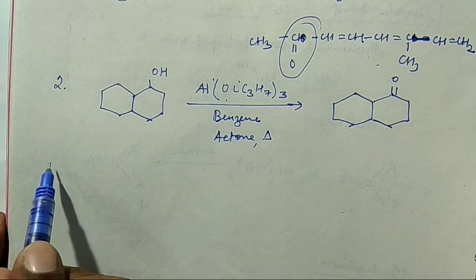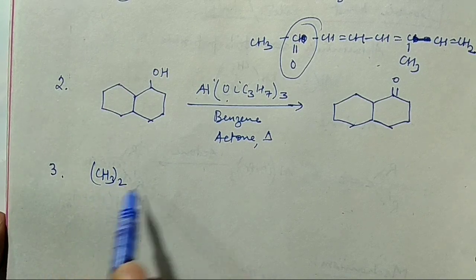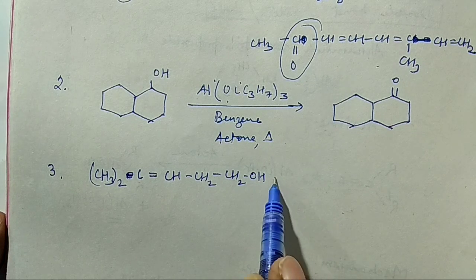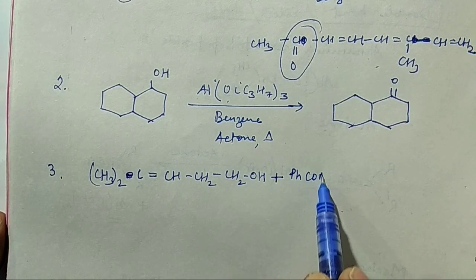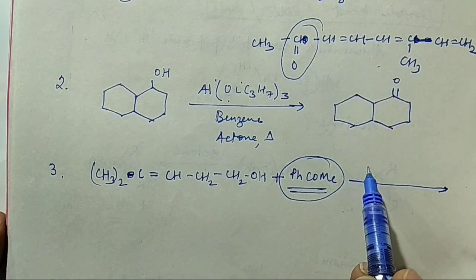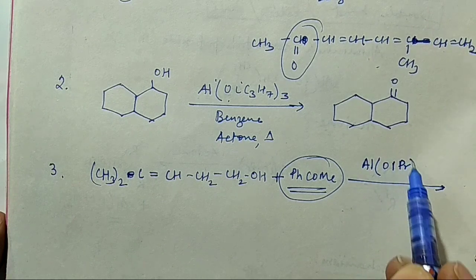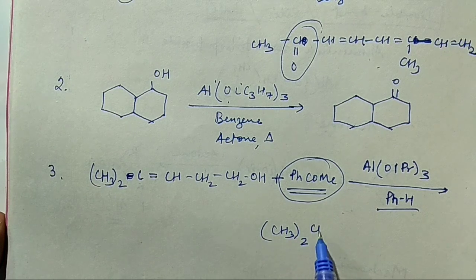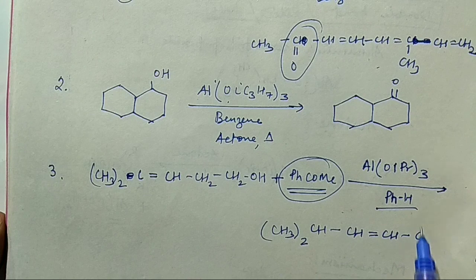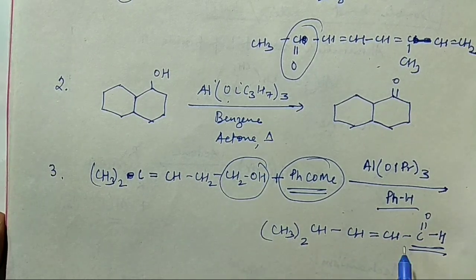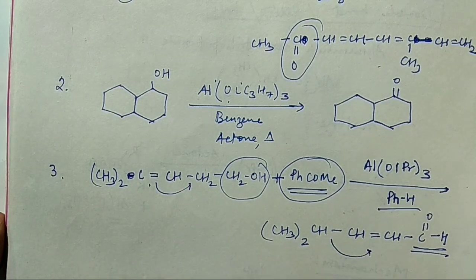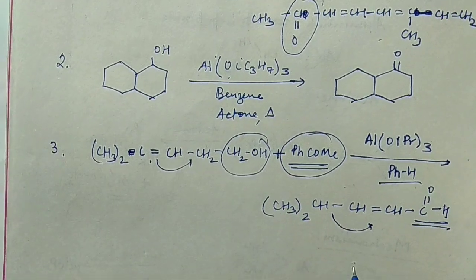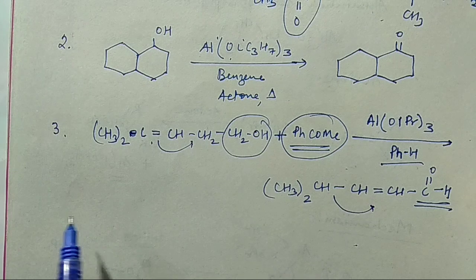Example 3: (CH₃)₂C=CH–CH₂CH₂OH, a primary alcohol, is treated with PhCOCH₃ (acetophenone/aryl ketone) as the hydride acceptor, Aluminium Isopropoxide, and benzene as solvent. The product is (CH₃)₂C=CH–CH=CH–CHO. Note that the double bond has shifted to create conjugation with the new aldehyde. Double bonds sometimes shift to create conjugation for a more stable product.